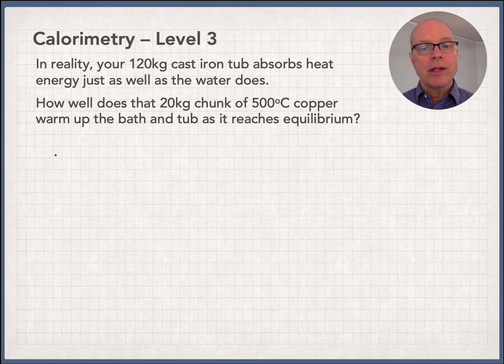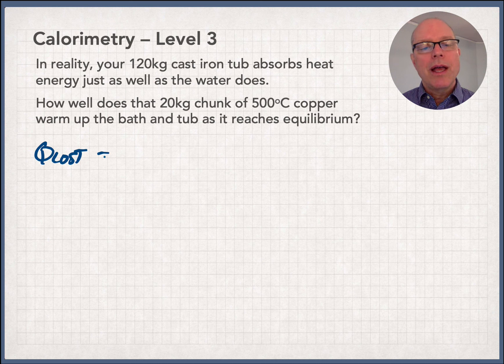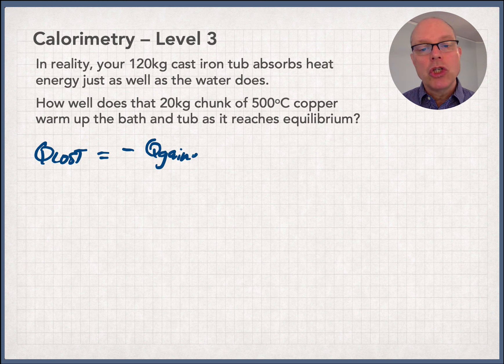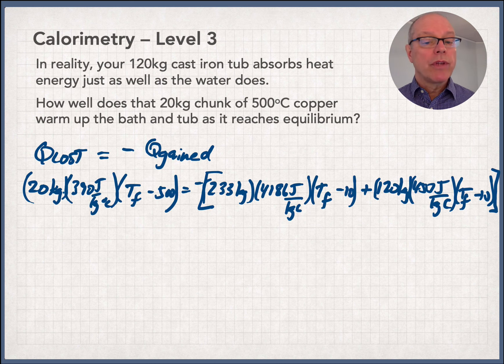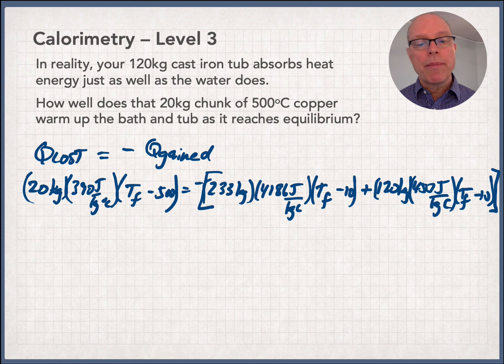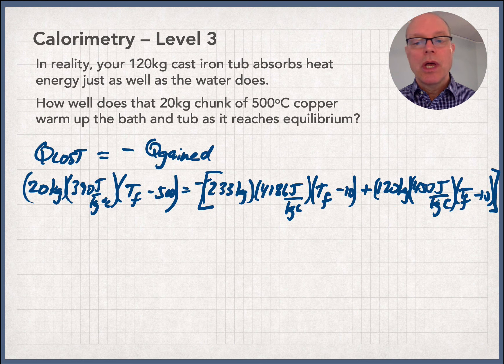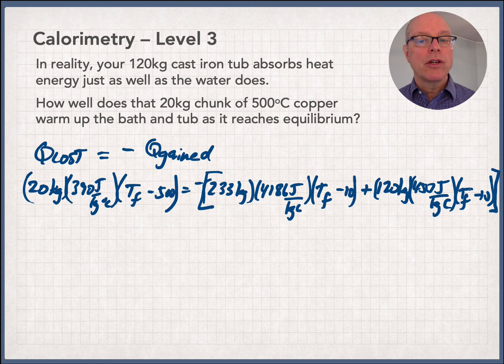So what you're going to see me do is set up the exact same problem, except I'm going to see Q lost is lost by the copper, and that is going to be negative of the Q gained. But it's going to be gained by two things. It's going to be gained by the water in the bathtub and by the cast iron. So I'm going to go write that off camera and set that up. So all we've done here, started out exactly like we had last time, copper, water, and we've just added a term now inside of our square brackets for the tub itself. So 120 kilogram tub, specific heat of cast iron, and same term, we're assuming that the cast iron tub is also at 10 degrees initially.